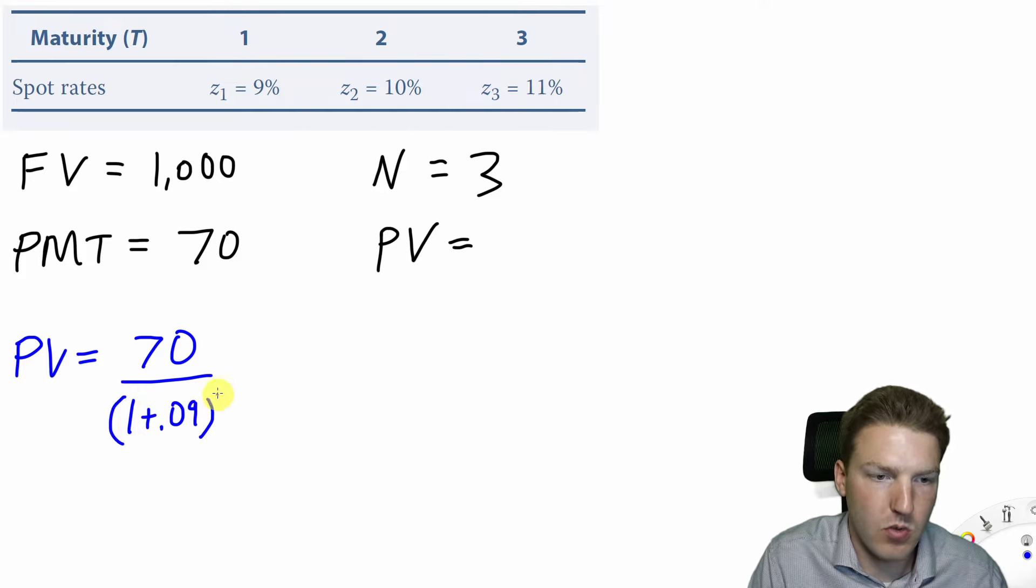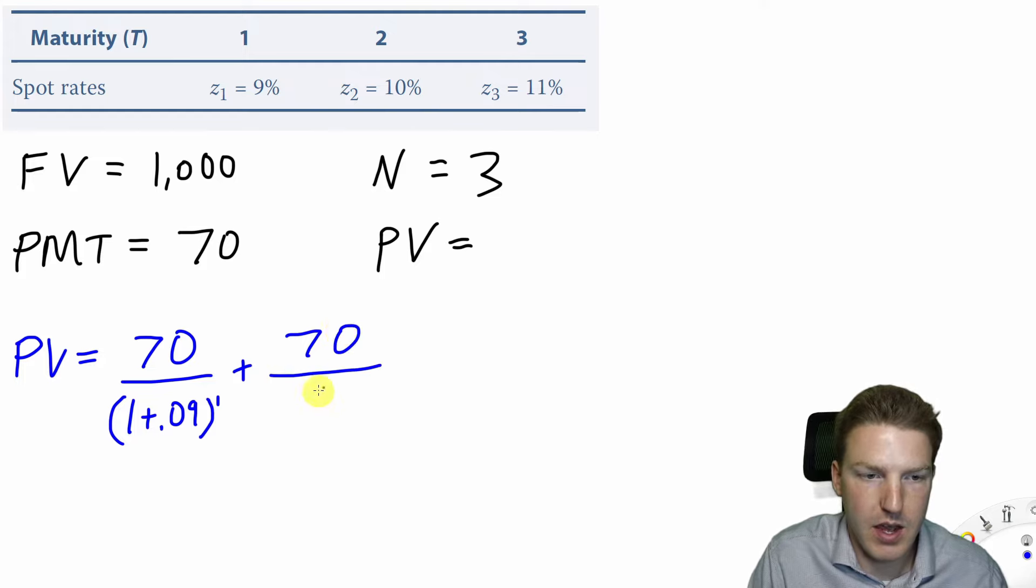just compounded one time. Then the second year's cash flow, $70, divided by 1 plus the second-year spot rate of 10%, so .1, compounded two times,